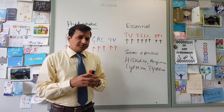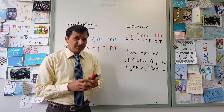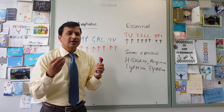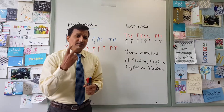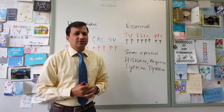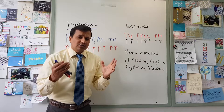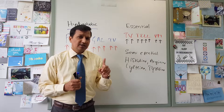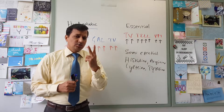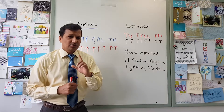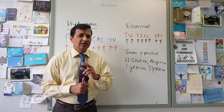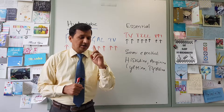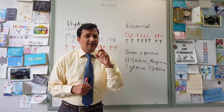Within the hydrophilic amino acids, we have 2 sulfur-containing amino acids: cysteine and methionine. There are 3 hydroxyl-containing amino acids: tyrosine, serine, and threonine. There are 2 acidic amino acids: aspartate and glutamate. And there are 3 basic amino acids: arginine, lysine, and histidine.